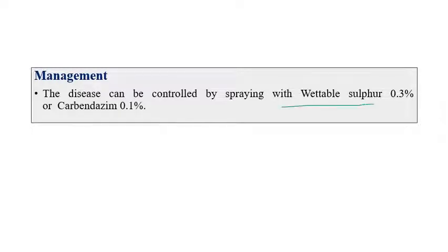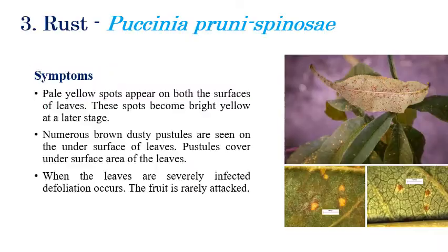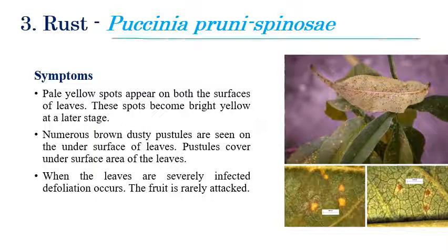For management of powdery mildew, spraying of wettable sulfur 0.3% or carbendazim 0.1% can control the disease. The third disease is rust, caused by Phakopsora pruni-spinosae.